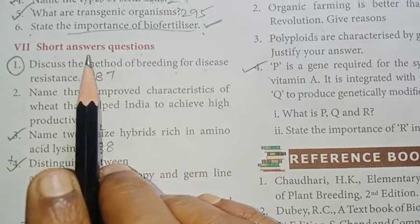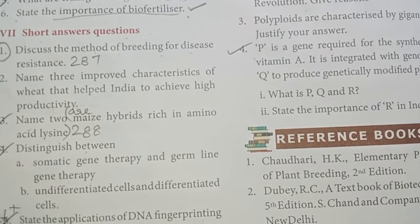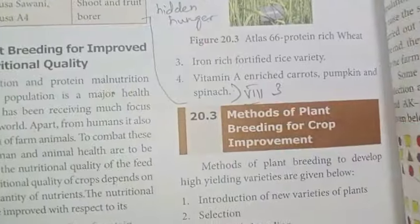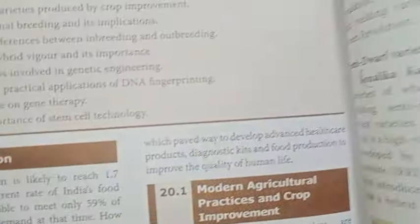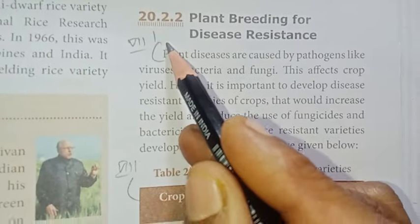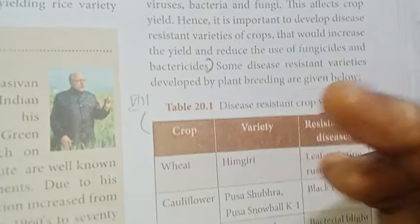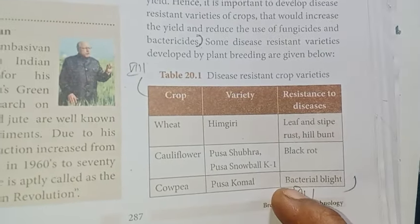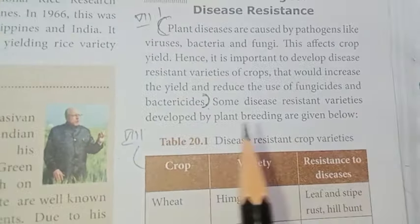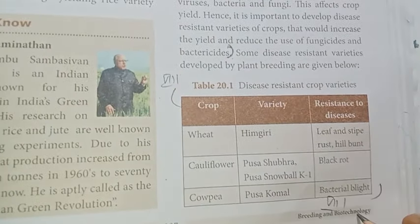Short answer questions. First: Discuss the method of breeding for disease resistance. Page 287. Refer to plant breeding for disease resistance — the first tabular column covers plant breeding for bacterial diseases.